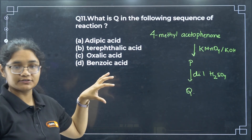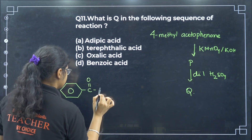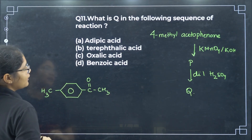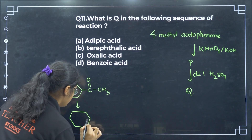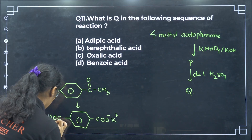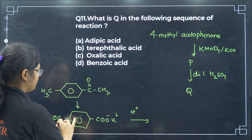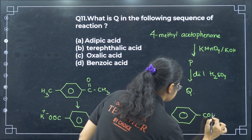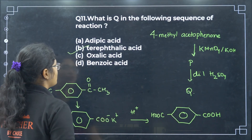What is Q in the following sequence of reaction? We start with 4-methyl acetophenone and treat it with KMnO4 and KOH, which is an oxidizing agent. This oxidizes both groups to give COO⁻K⁺ on both sides. After hydrolysis, both convert to COOH groups. This dicarboxylic acid is called terephthalic acid — option B.